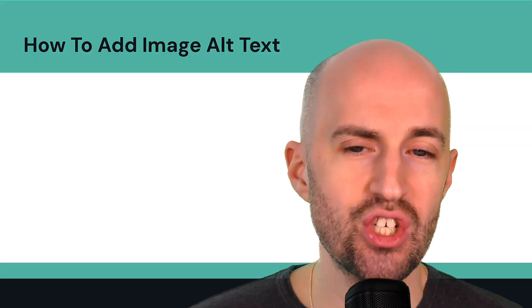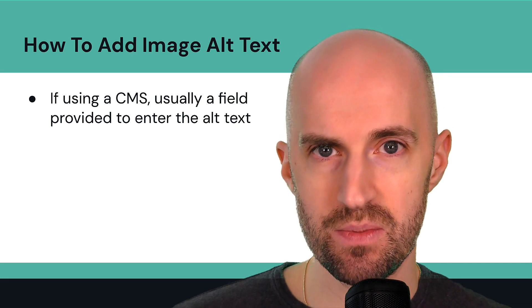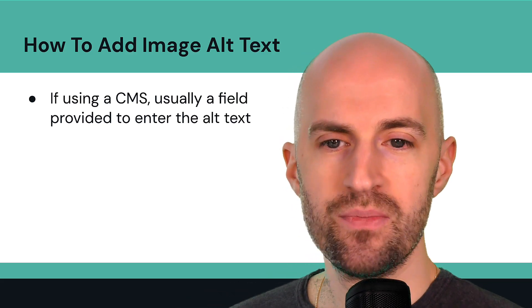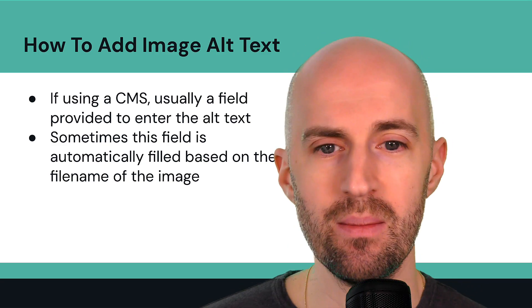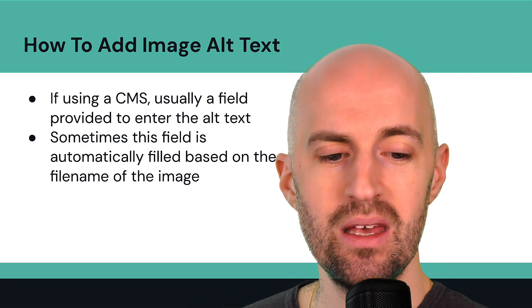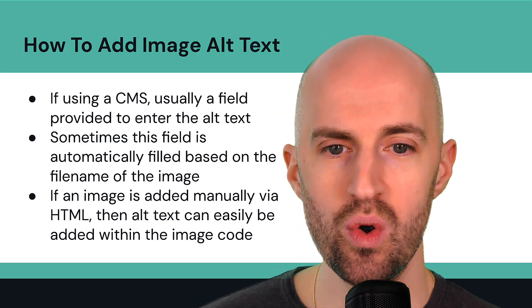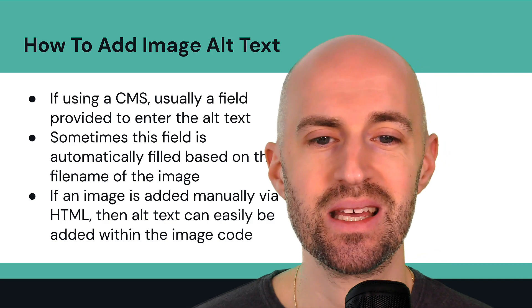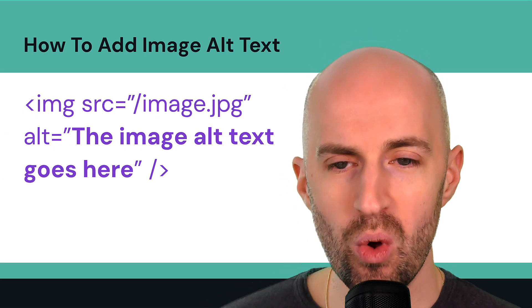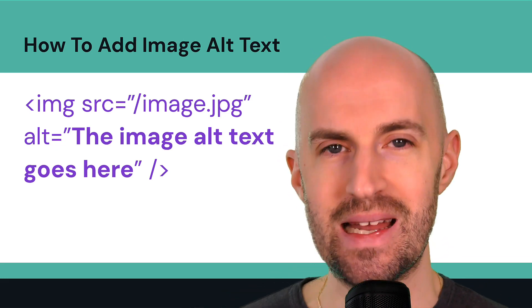So how do you actually add image alt text on your website? If you're using a CMS or content management system, there's usually a field provided to enter the alt text for that image. Sometimes this field is automatically filled when you upload an image based on the file name or metadata within the file. But if you add an image manually through code or HTML, the alt text can easily be added within the image code using the alt attribute — that's where that text goes.